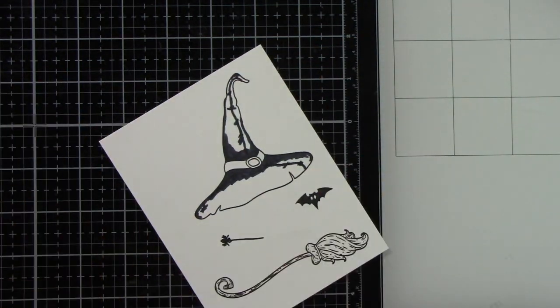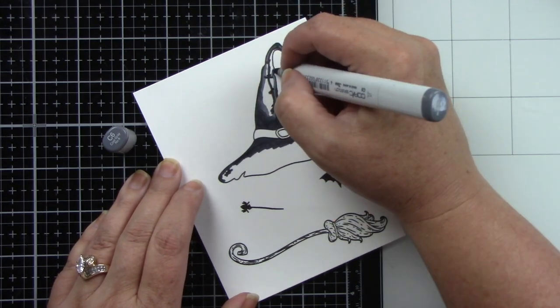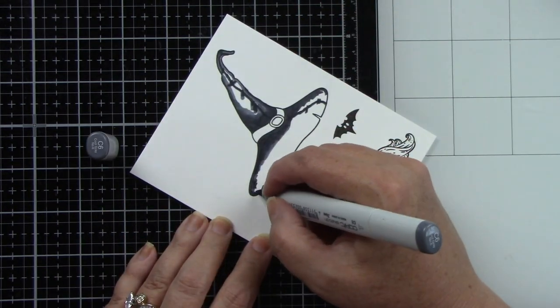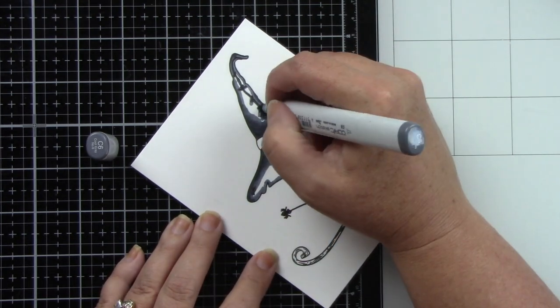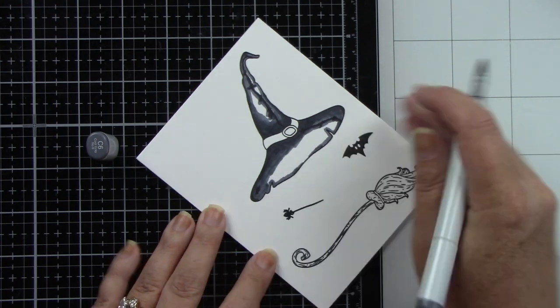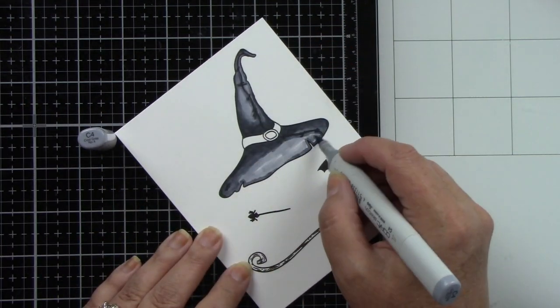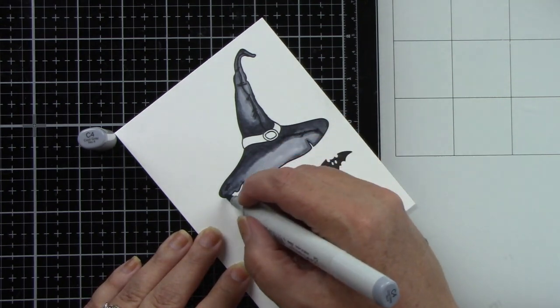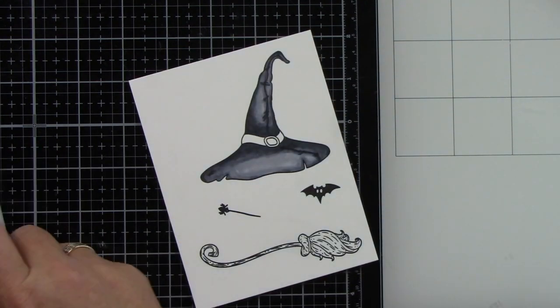I want to make my witch hat look black using Copic markers in C8, 6, and 4. Laying down the C8, which is the darkest color, here's the C6—my middle color—then my lightest C4.